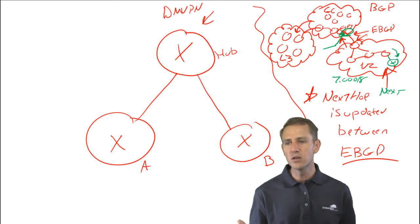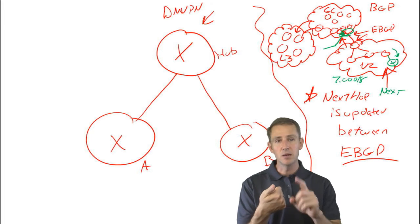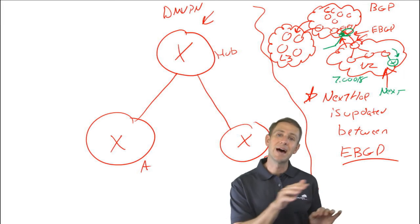So what you can do, coming back to the next hop rule, next hop is updated between EBGP neighbors, but it's left alone between IBGP neighbors.